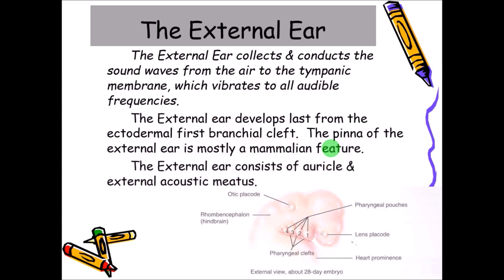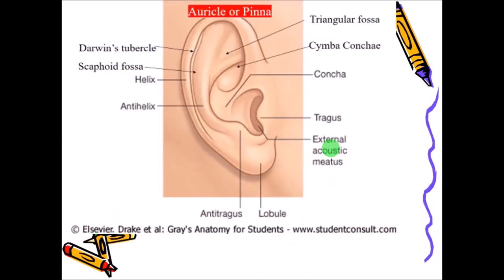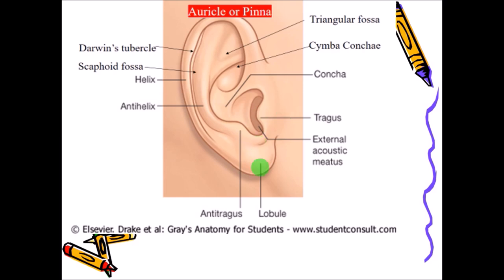The external ear consists of the auricle and the external acoustic meatus. The auricle is also called the pinna. Just around the opening of the tube is a structure called the tragus, and just opposite is a similar elevation called the anti-tragus. Below this you can see a soft tissue with fat content covered by skin — this is called the lobule.